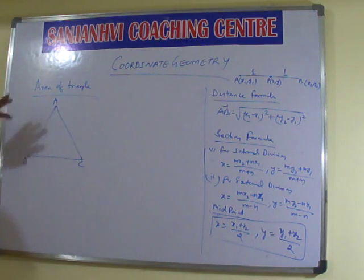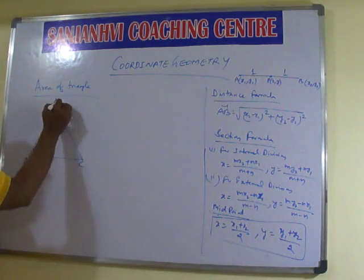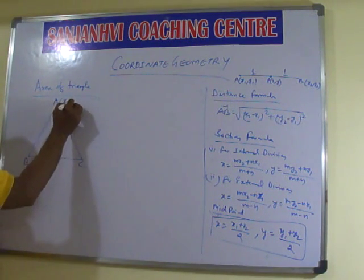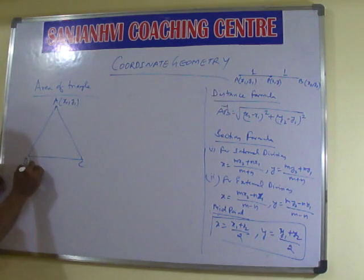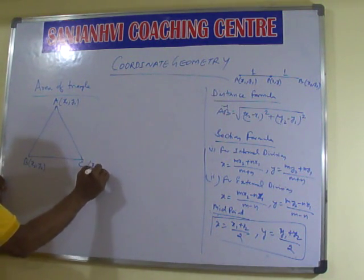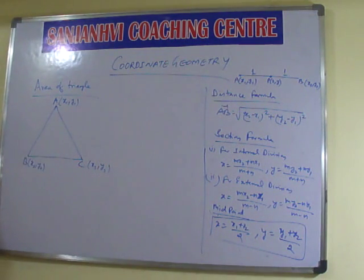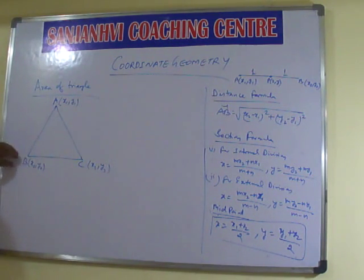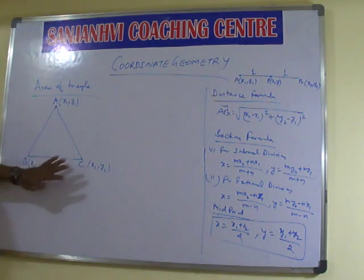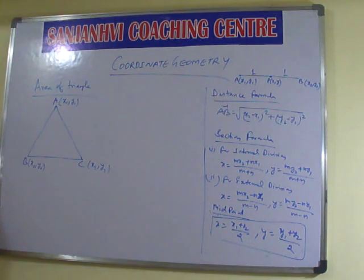We are going to discuss now that suppose ABC is a triangle having coordinates x1 and y1, B having x2 and y2, and C having x3 and y3. We are studying coordinate geometry so x and y will be there. So if we are given coordinates A, B, C as x1,y1; x2,y2; x3,y3 — then how will we be able to find out the area of the triangle?